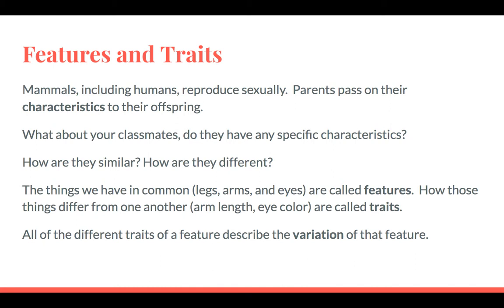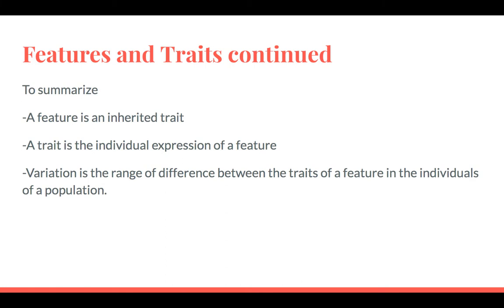All the different traits of a feature describe the variation of that feature. To summarize: a feature is an inherited trait; a trait is the individual expression of a feature; and the variation is the range of differences between the traits of a feature among individuals of a population. For example, talking about hair, the variation goes all the way from blonde hair to black hair, and anything in between.